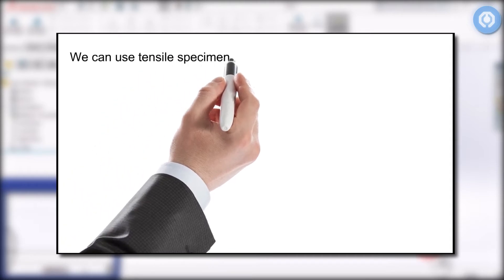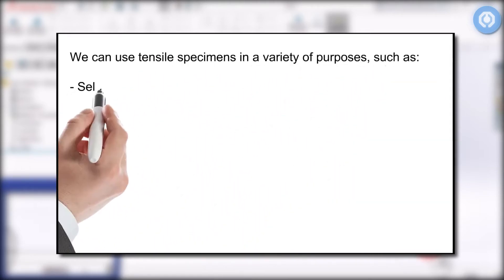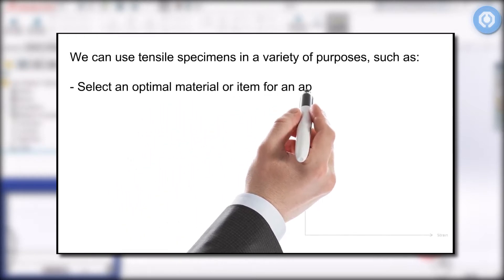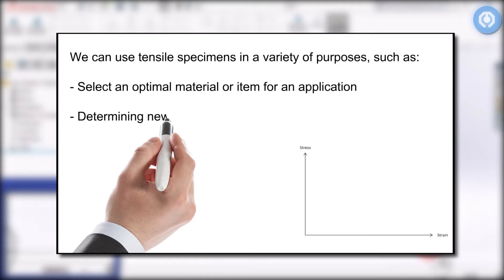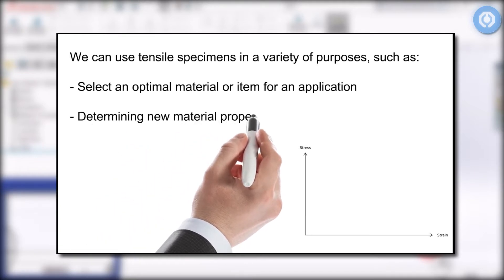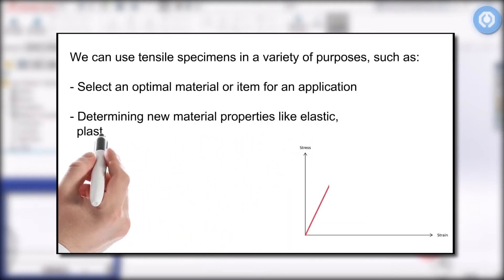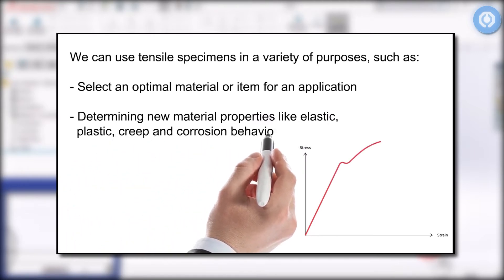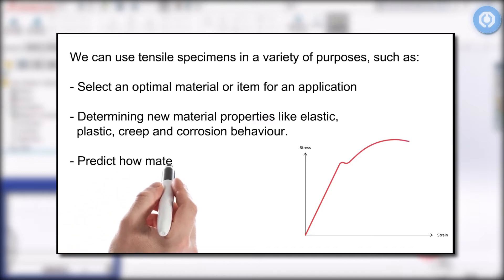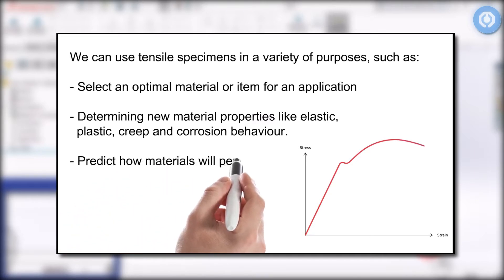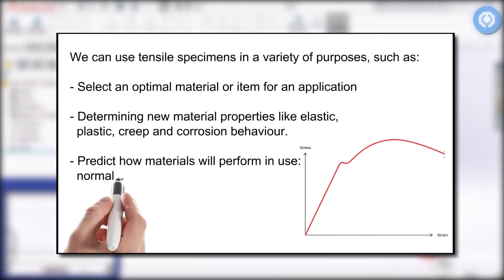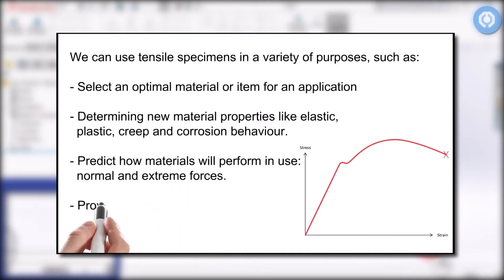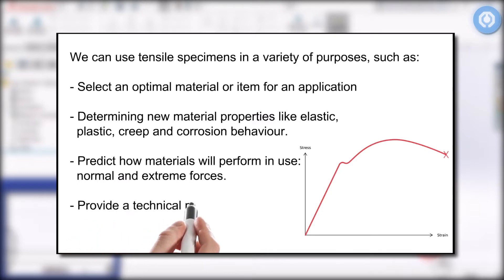We can use tensile specimens for a variety of purposes, such as selecting an optimal material or item for an application, determining new material properties like elastic, plastic, creep, and corrosion behavior, predicting how materials will perform in normal and extreme forces, and providing a technical means of comparison of several options.